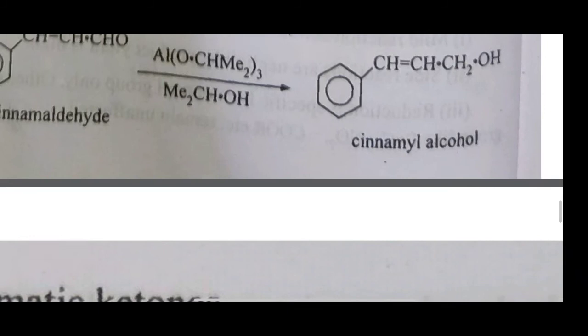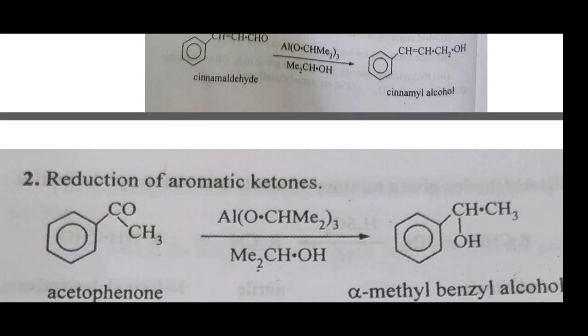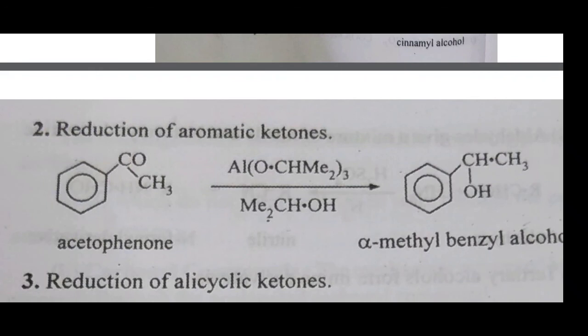The second application is reduction of aromatic ketones. For example, acetophenone in the presence of aluminum isopropoxide undergoes reduction. The C=O group is converted to CH–OH, the benzene ring remains as it is, and the product is alpha-methylbenzyl alcohol.